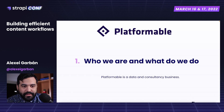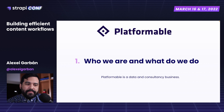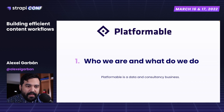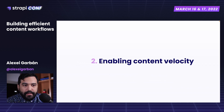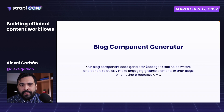One of our most recent and interesting client works was building an interactive ecosystem landscape map for API Days, an industry that helps deliver content and conferences to the API technology sector. What we are going to talk about today is enabling content velocity — what we call the block component generator.